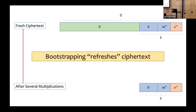This is where bootstrapping comes in. CKKS bootstrapping takes a ciphertext where all the ciphertext modulus bits have been consumed and brings it back close to a fresh ciphertext so that homomorphic computation can continue. Because of the nature of approximate arithmetic, data loses precision every multiplication, and bootstrapping cannot bring back this precision. So for large-depth circuits it is necessary to operate at high precision, including bootstrapping at high precision.